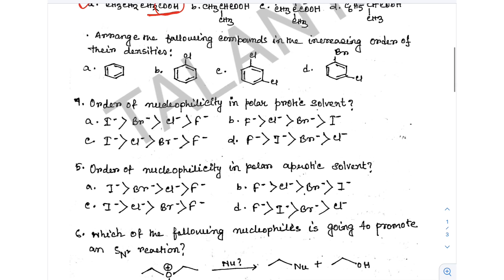Next, question 3: Arrange the following compounds in the increasing order of their densities. Density is mass divided by volume.